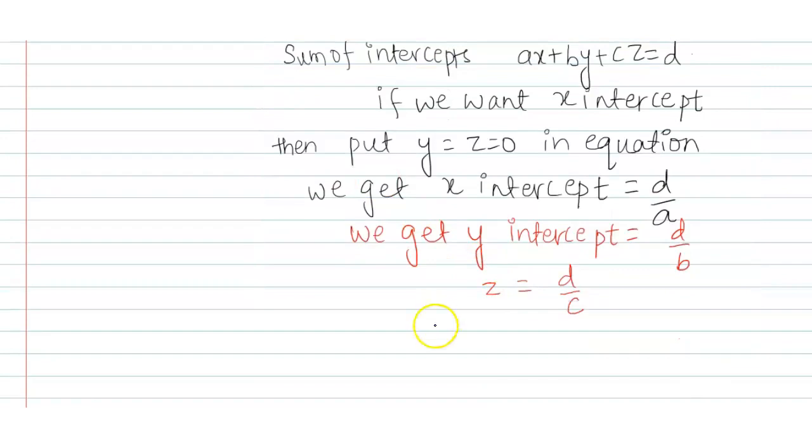Now, adding all the terms, we get the sum of intercepts is equal to D times (1 by A plus 1 by B plus 1 by C).